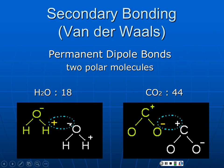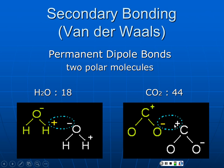The strongest van der Waals bond is the permanent dipole bond, where both molecules are polar — giving a permanent negative charge attracting a permanent positive charge. CO₂ demonstrates this. The molecular mass of CO₂ is 44 (12 + 16 + 16), while H₂O is only 18 — CO₂ is more than twice as heavy. Yet water is a liquid at room temperature while CO₂ is a gas. Similarly, hydrocarbons like gasoline have molecular weights over 100 AMU but vaporize easily because they have no significant polarity and very weak van der Waals bonds.